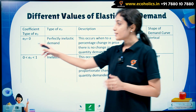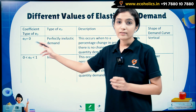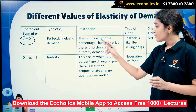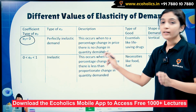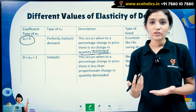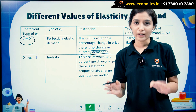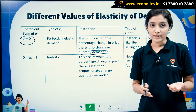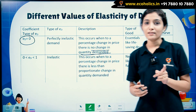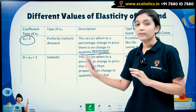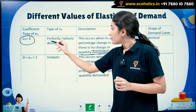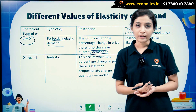The first case is when price elasticity of demand is 0. The interpretation is that this occurs when, to a percentage change in price, there is no change in the quantity demanded. So if the price is 10% greater but the quantity demanded has no change, elasticity will be equal to 0. In this case, the type of elasticity is perfectly inelastic demand.